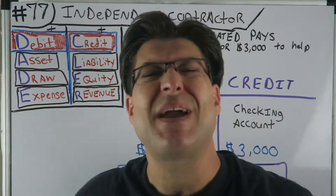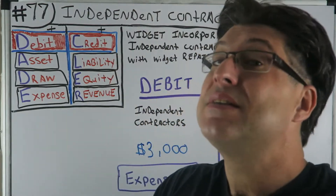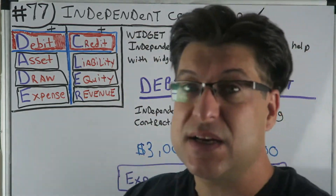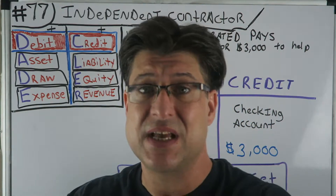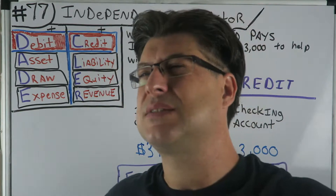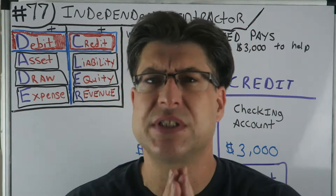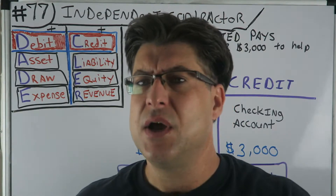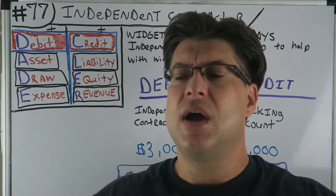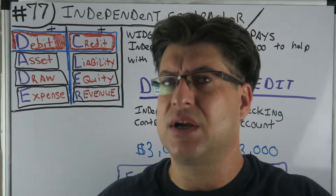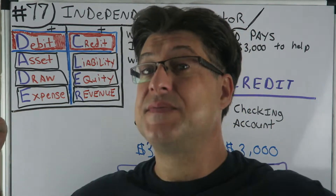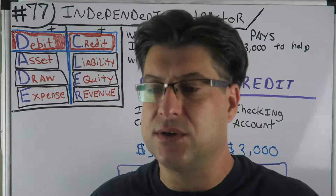This is number 77 of my classic series — AFB, Accounting for Beginners classic series. Number 77: independent contractor. We're going to do an independent contractor expense, a subcontractor, the cost of goods sold. I want to be clear: a cost of goods sold is really just an expense — it's on the income statement under expenses. For the purpose of this video, we're going to leave the independent contractor as an expense.